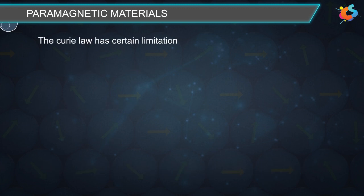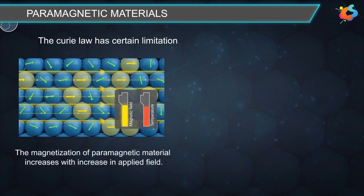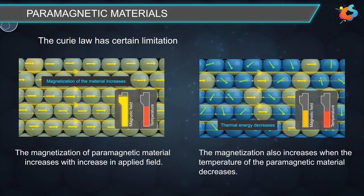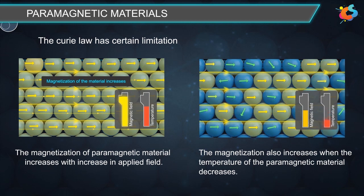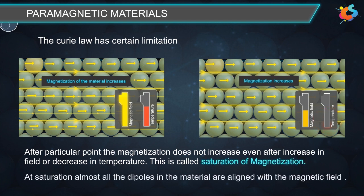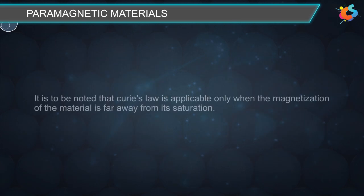Curie's law has certain limitations. We have learned that the magnetization of paramagnetic material increases with increase in applied field and also increases when temperature decreases. However, in both cases, after a particular point, the magnetization does not increase even with further increase in field or decrease in temperature. This is called saturation of magnetization. At saturation, almost all the dipoles in the material are aligned with the magnetic field. Curie's law is applicable only when the magnetization of the material is far from saturation.